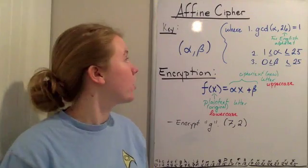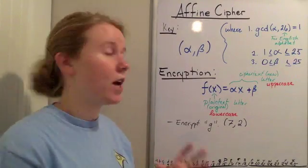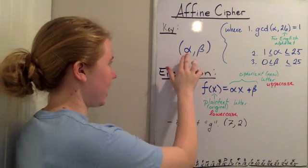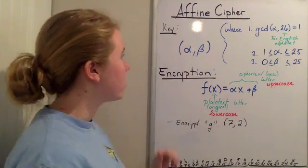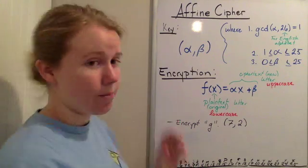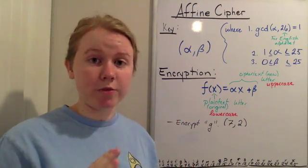This video is about the affine cipher. The key for an affine cipher is going to be written as alpha comma beta, where both alpha and beta are numbers, and there are three requirements for alpha and beta.